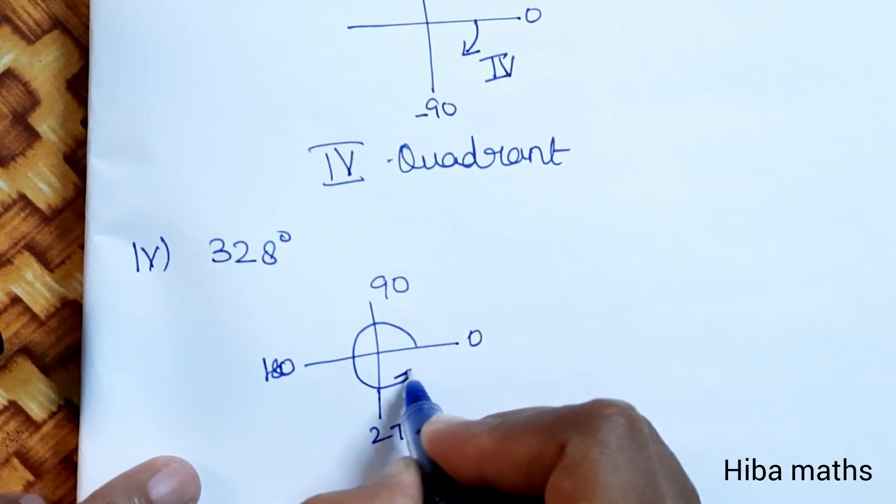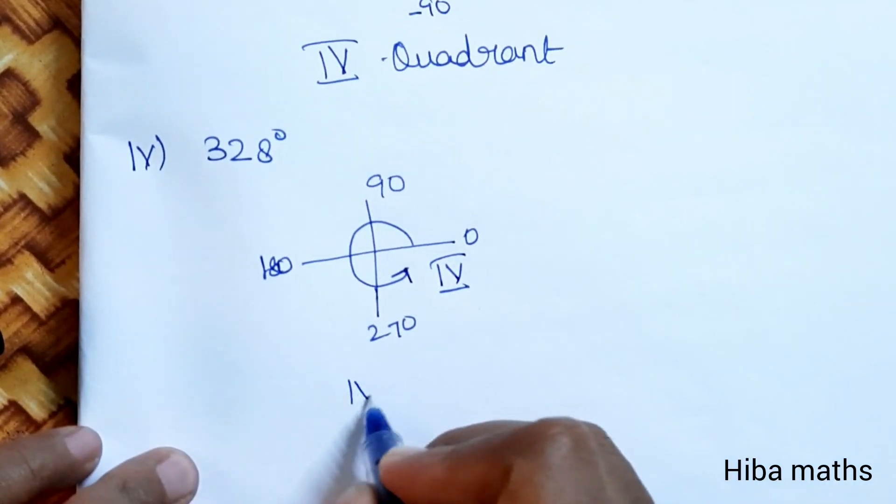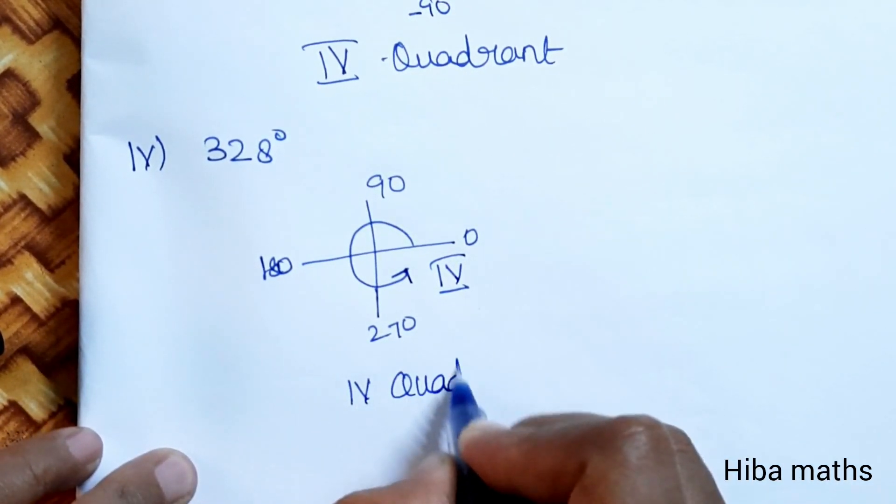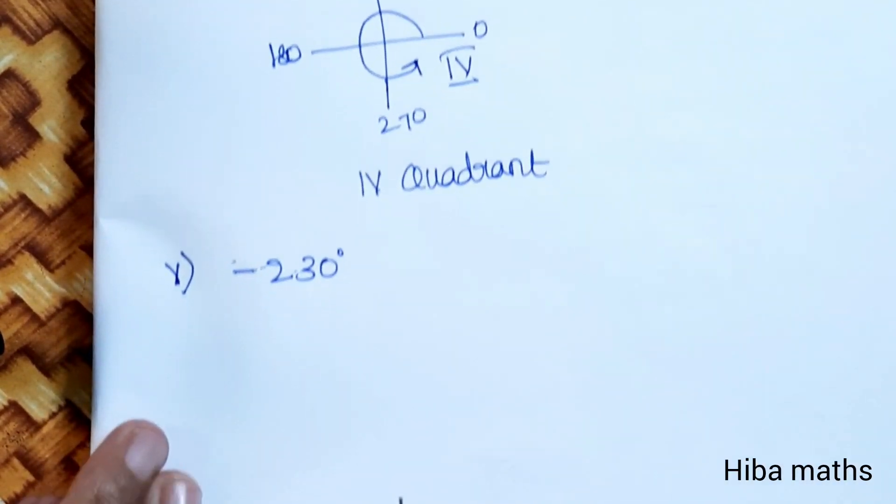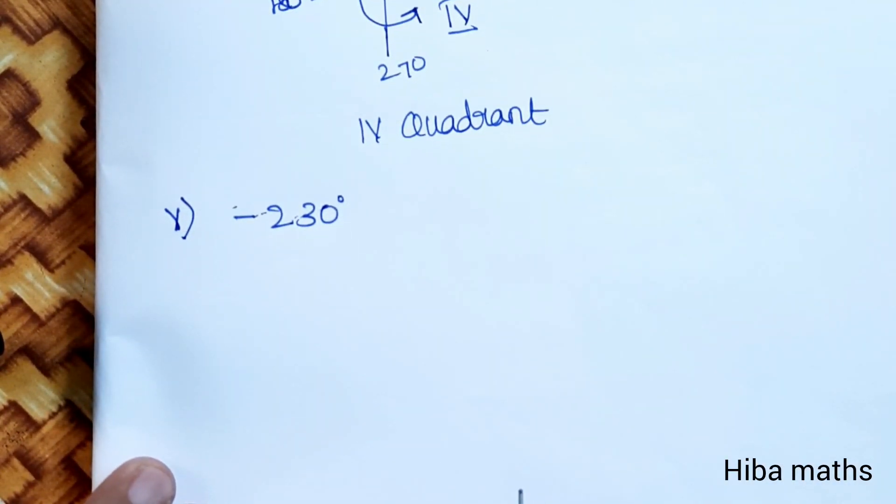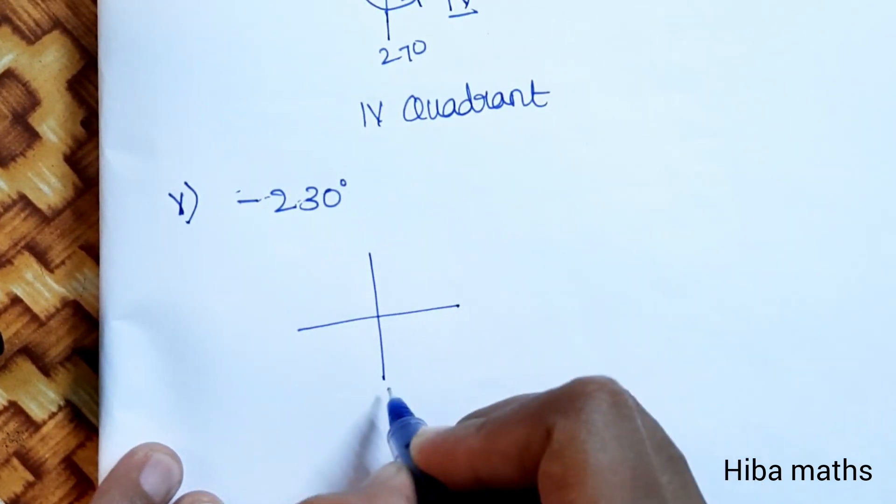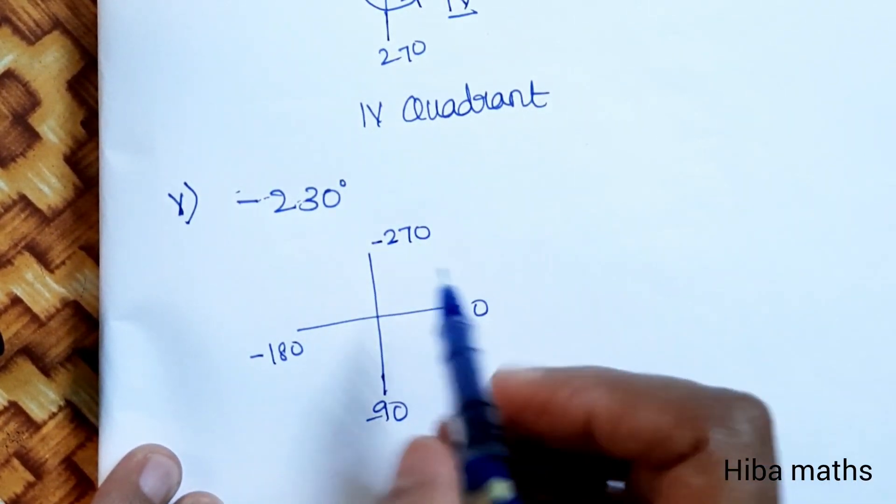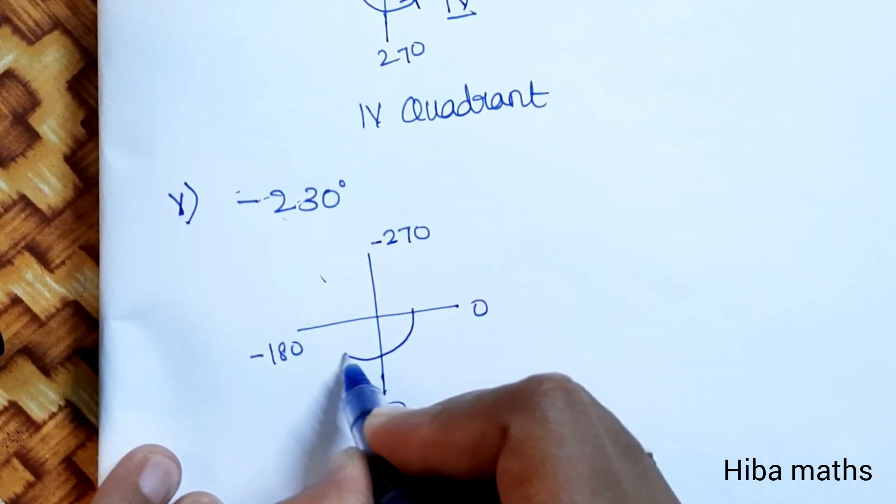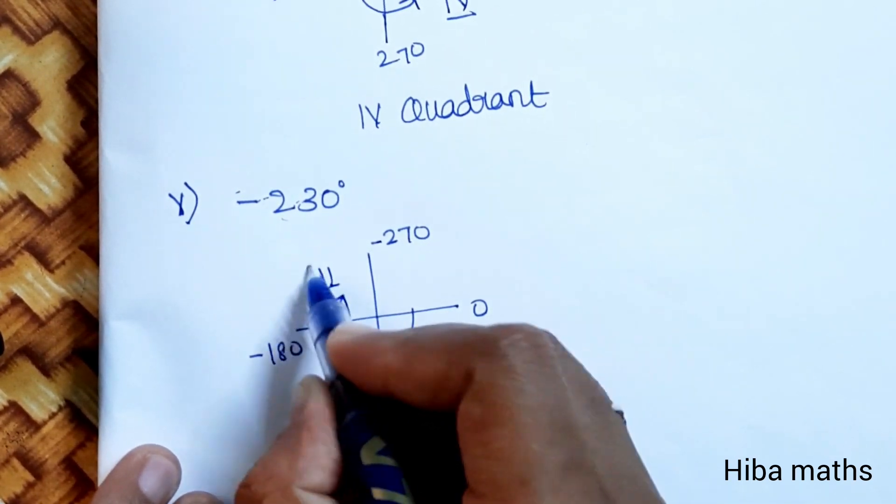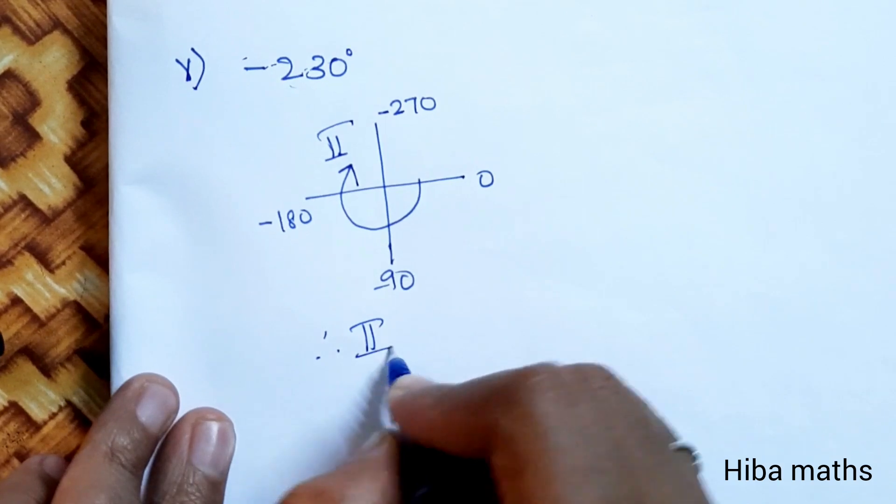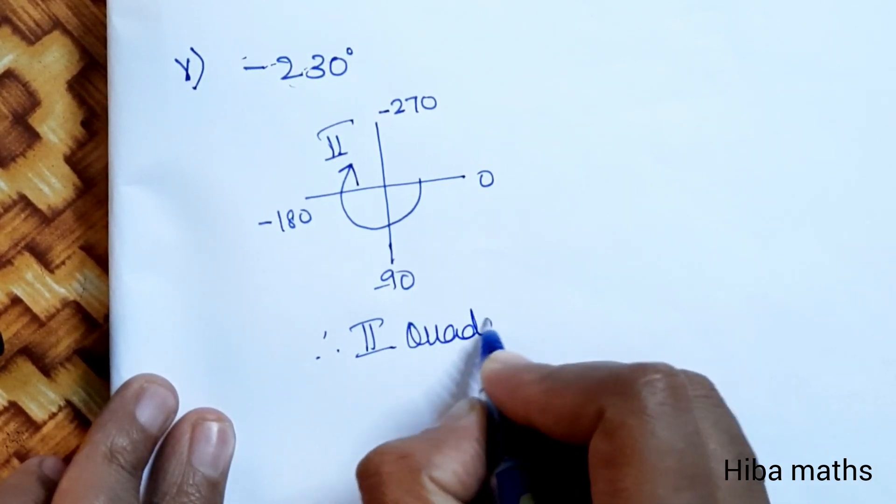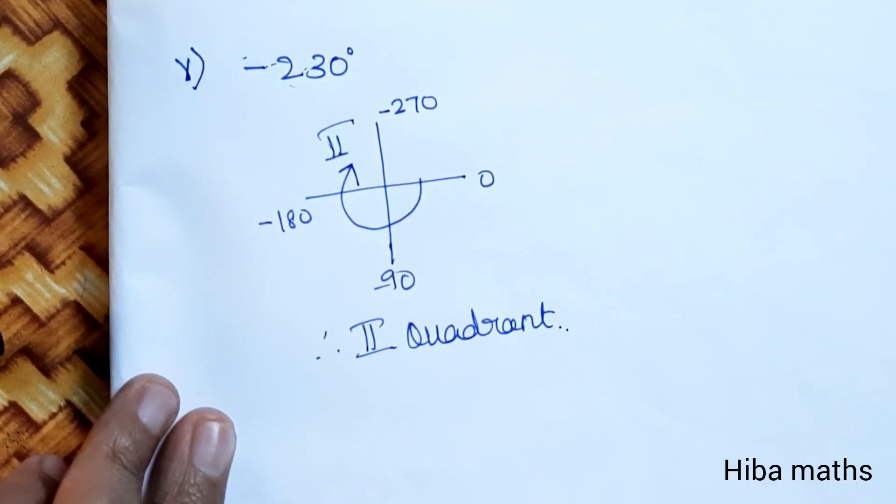Fifth question is -230 degrees. This is negative, so we go in reverse. From 0°, we go to -90°, -180°. -230° falls between -180° and -270°. Therefore, the answer is second quadrant.